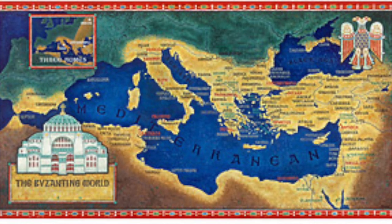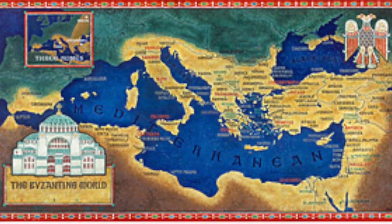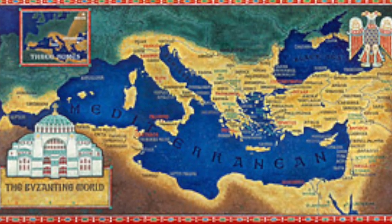Our next plague is the Plague of Justinian, from 541 to 542 AD. Some of these plagues lasted 100 years, some 20 years, some 15 — it depended on how they were handled. This one killed 10% of the world's population.